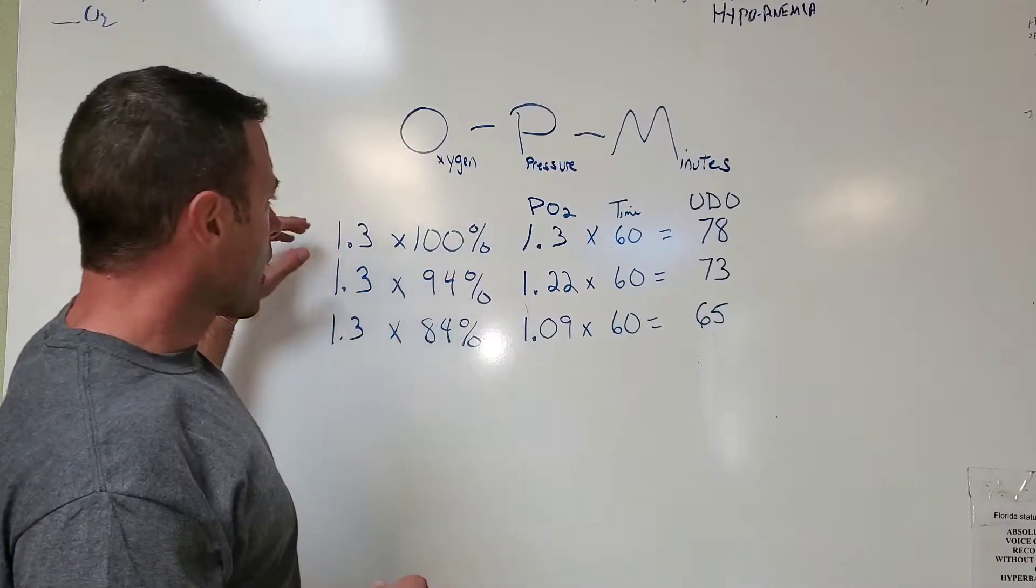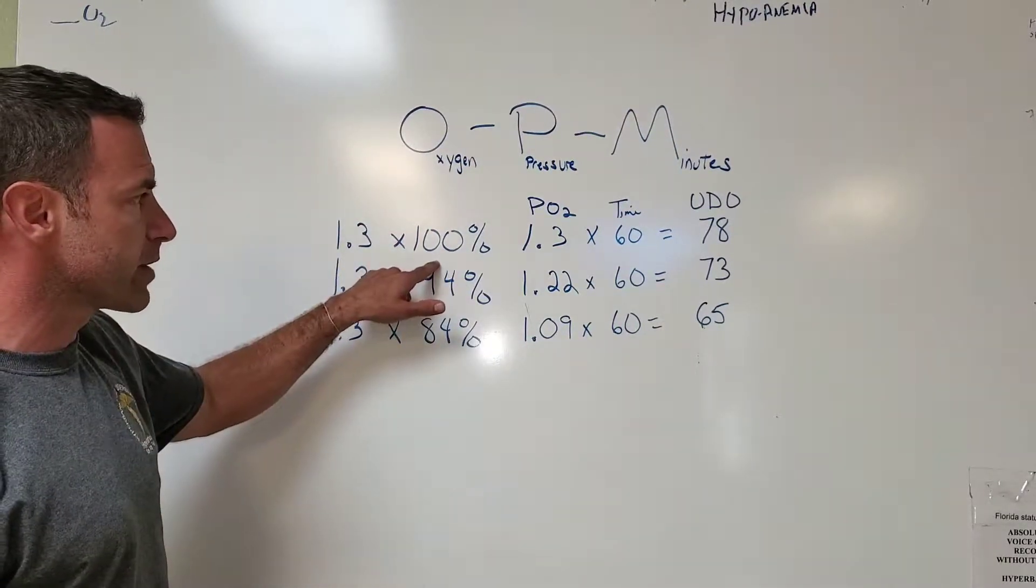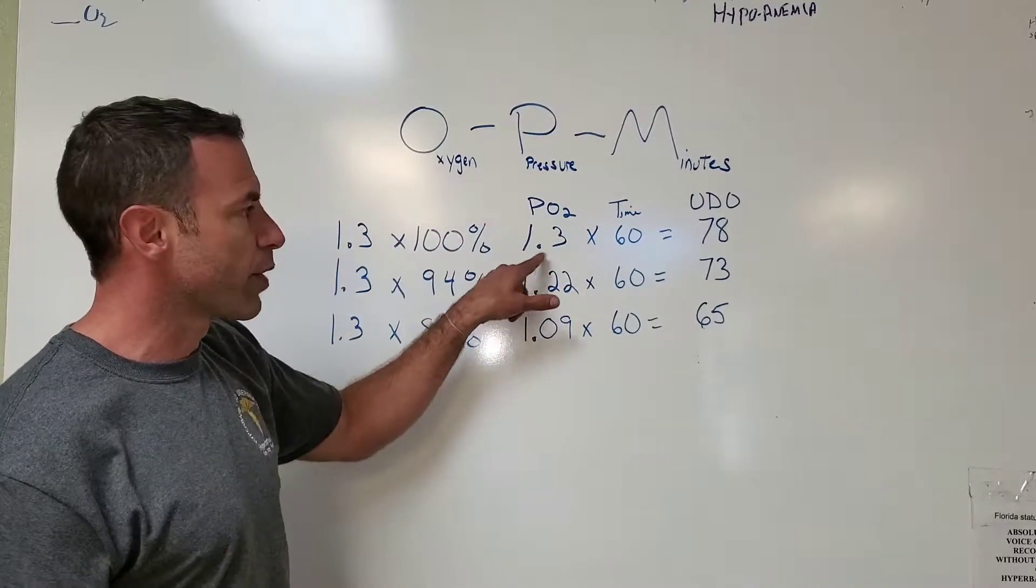Here we have a simple one: 1.3 times 100% oxygen would have a PO2, an oxygen dosage, of 1.3.